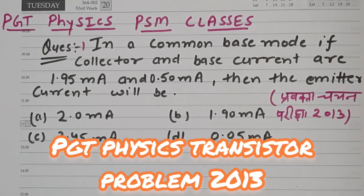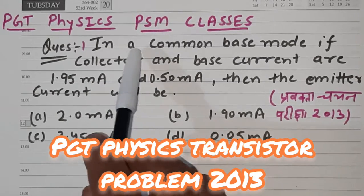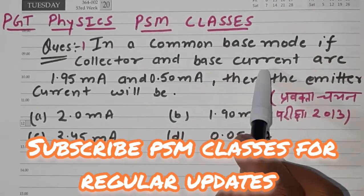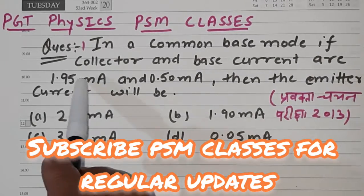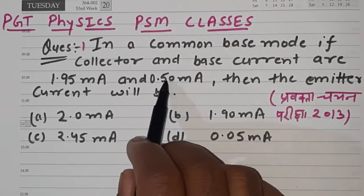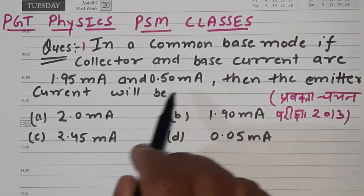Very good morning to all of you, welcome to PSM classes. So today our question is: In a common base mode, if collector and base currents are 1.95 milliampere and 0.50 milliampere, then the emitter current will be?